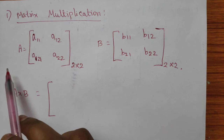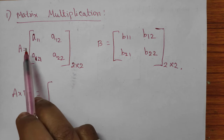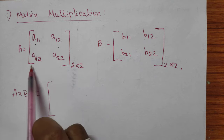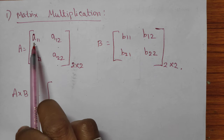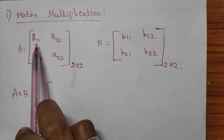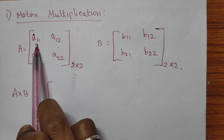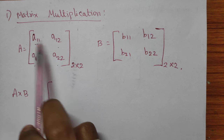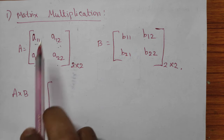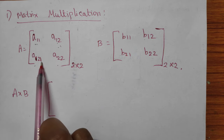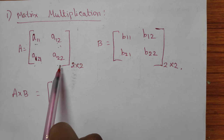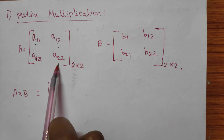In matrix A we have elements A11, A12, A21, and A22. A11 means first row and first column. A12 means first row and second column. A21 means second row and first column, and A22 means second row and second column.